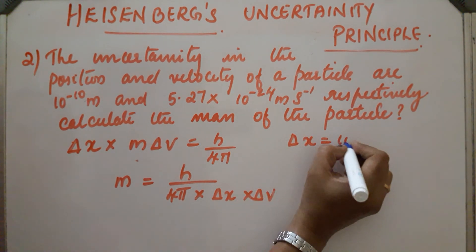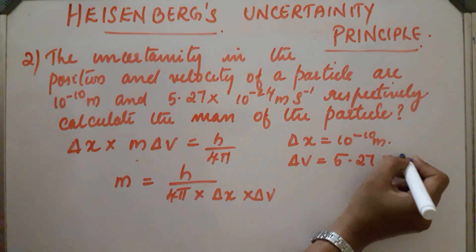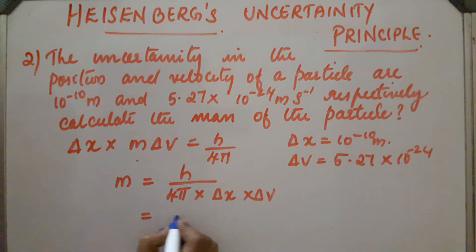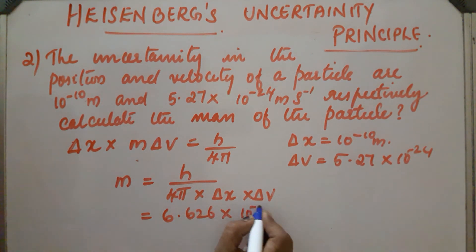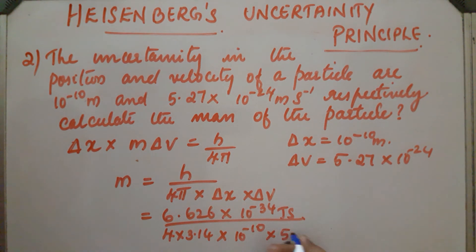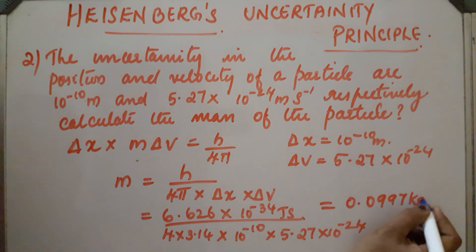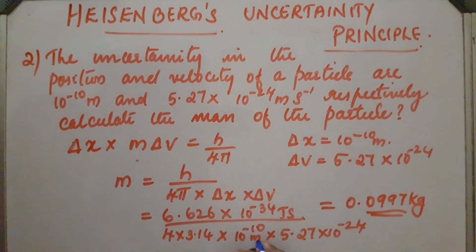Substituting: Delta X equals 10⁻¹⁰ meter and Delta V equals 5.27 × 10⁻²⁴. So M equals 6.626 × 10⁻³⁴ joule·second divided by 4 into 3.14 into 10⁻¹⁰ into 5.27 × 10⁻²⁴. After calculation, the value is 0.0997 kg. Like this, we can calculate the mass of the particle.